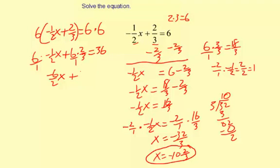Plus 6 times 2, which is 12, and then divided by 1 times 3, which is 3, equals 36.